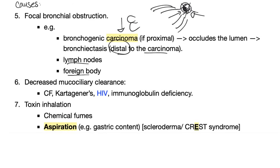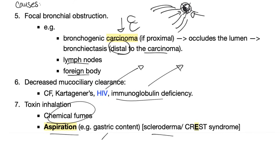Decreased mucociliary clearance — such as from cystic fibrosis, Kartagener syndrome, or HIV. That's why you should test a patient with bronchiectasis for HIV. Immunoglobulin deficiency: you cannot fight infection or clear debris. Toxin inhalation such as chemical fumes, and aspiration — especially of gastric content. Don't forget scleroderma/CREST syndrome because of esophageal dysmotility: if your esophagus is not working, you can end up aspirating, leading to aspiration and bronchiectasis.